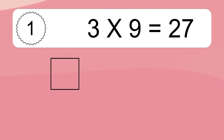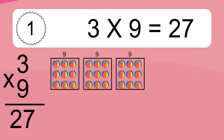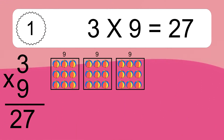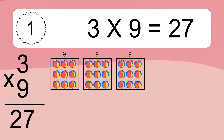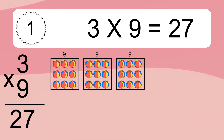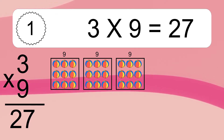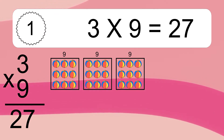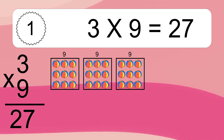3 times 9 equals 27. We have 3 boxes, and each box has 9 colorful balls inside. If you count all the balls in all the boxes together, you will have 3 times 9 balls. This equals 27 balls.